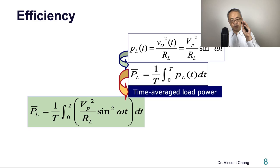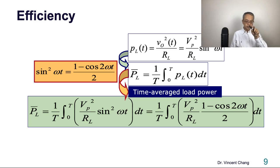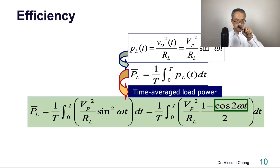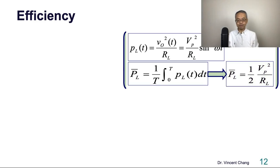So just plug in and then try to deal with this integration. If you have ever learned the trigonometric function algebra, you have this: sine squared omega t equals one minus cosine two omega t divided by two, and then you plug in. So pay attention to this. This is the cosine wave. You do the time integration over the cosine two omega t, you do a time integration over a period, and then you will vanish. You contribute nothing to the time-average load power. So here's the time-average load power. Just pull out the half, the one over two.